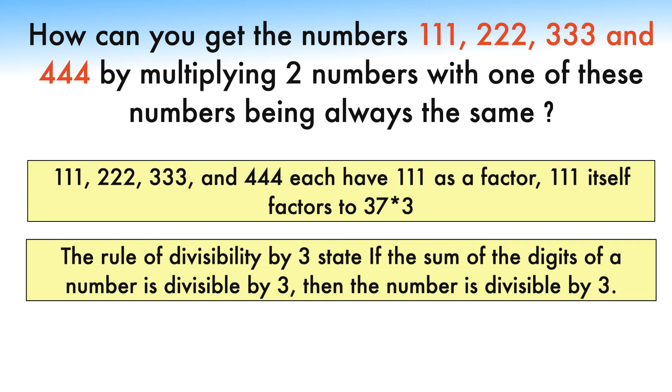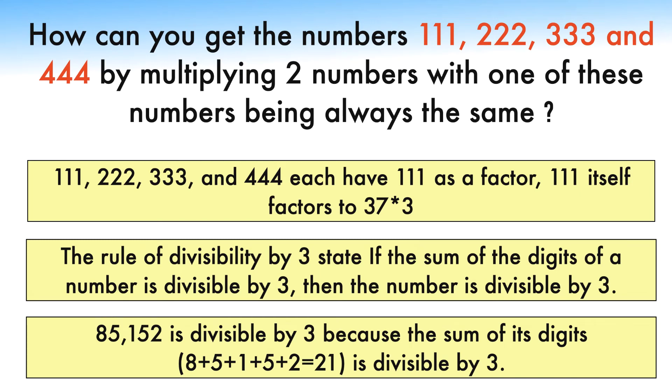Some examples of numbers divisible by 3 are: the number 85152 is divisible by 3 because the sum of its digits, 8 plus 5 plus 1 plus 5 plus 2 equals 21, is divisible by 3.